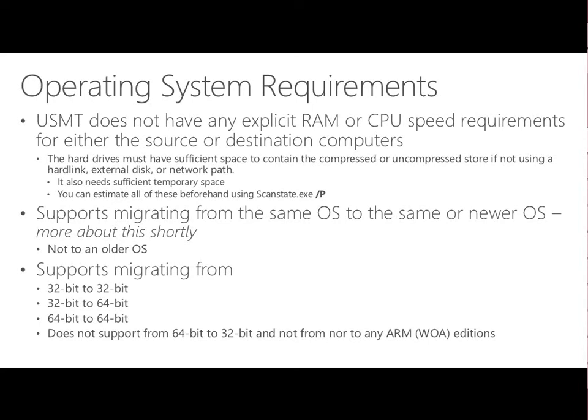For architecture, you can migrate from 32-bit to 32-bit, 32-bit to 64-bit, or 64-bit to 64-bit, but you cannot go from 64-bit to 32-bit. You also cannot migrate to any ARM or Windows on ARM chip edition — for example, you couldn't migrate from a Windows XP machine onto a Windows RT device. A workaround for getting user data to an ARM device would be putting everything into SkyDrive, which is available on Windows XP and accessible on Windows 8.1 ARM devices.